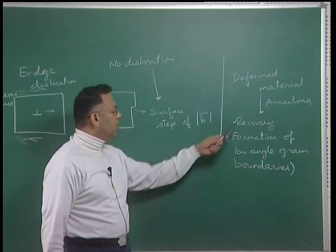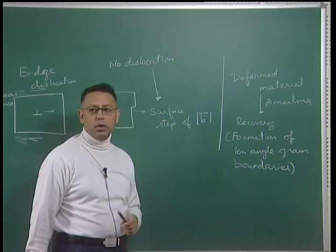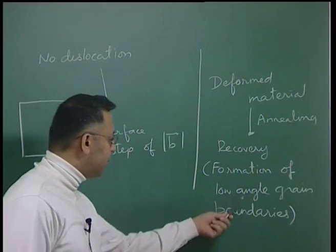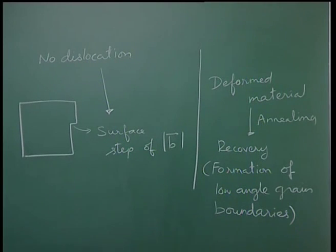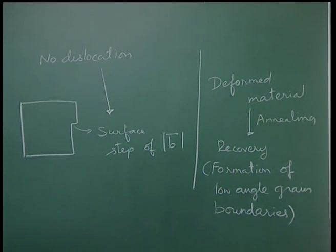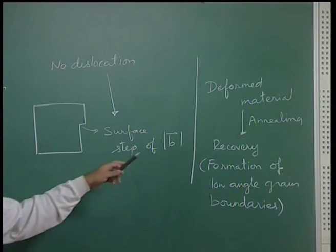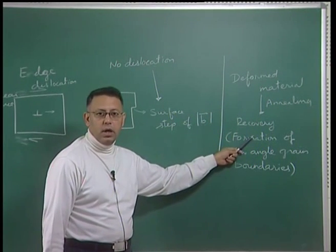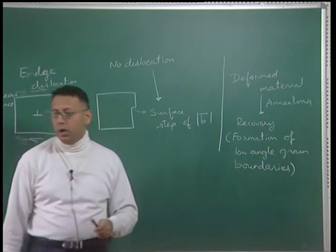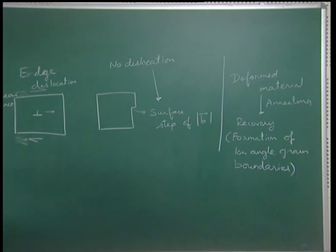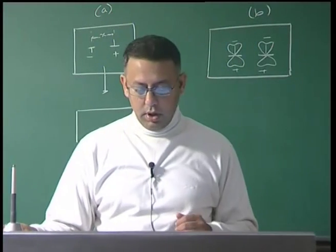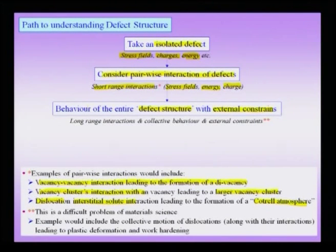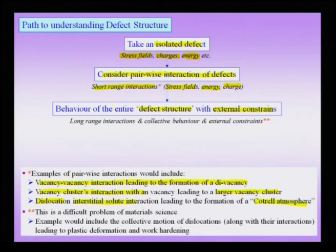When I take a deformed material and heat it — a process called annealing — the system evolves to a low energy state in which low-angle grain boundaries form. We are seeing how the system evolves during plastic deformation and how it evolves afterwards during heat treatment. When talking about system evolution, I am tracking what we call the spatiotemporal defect structure in the material.